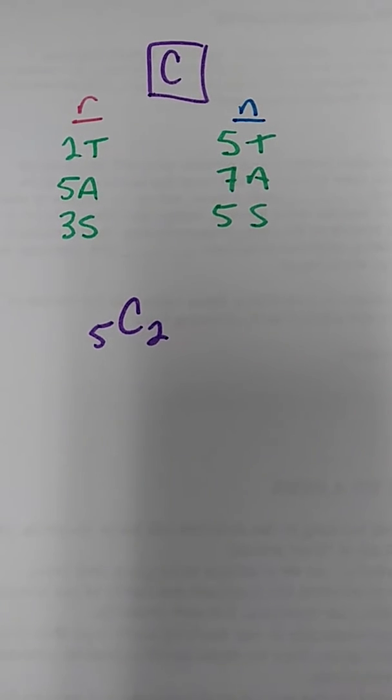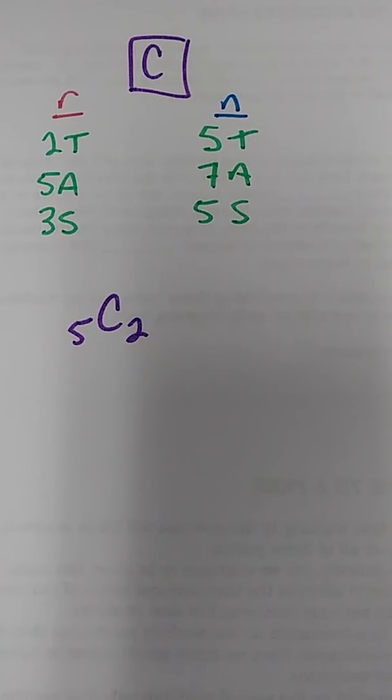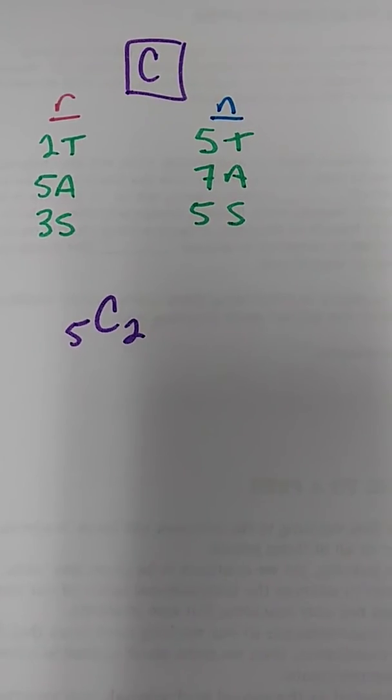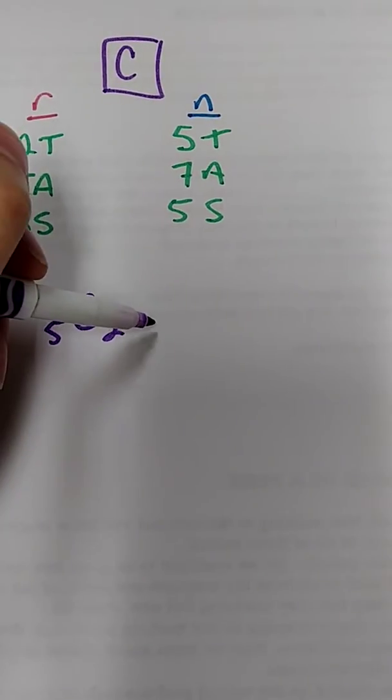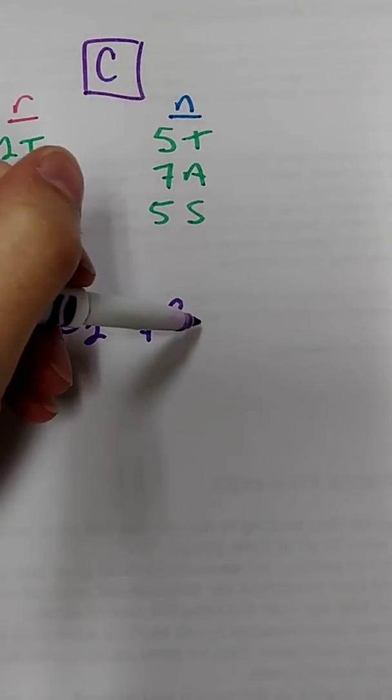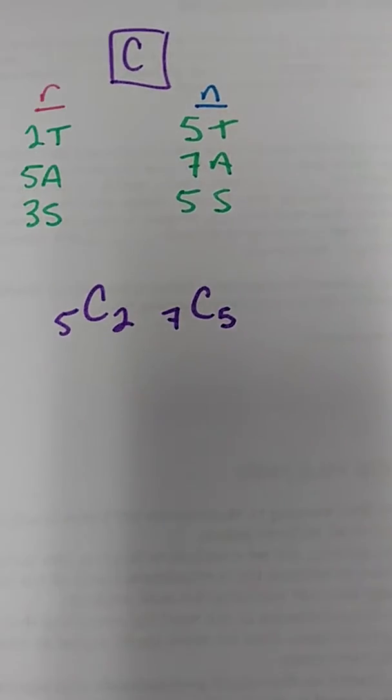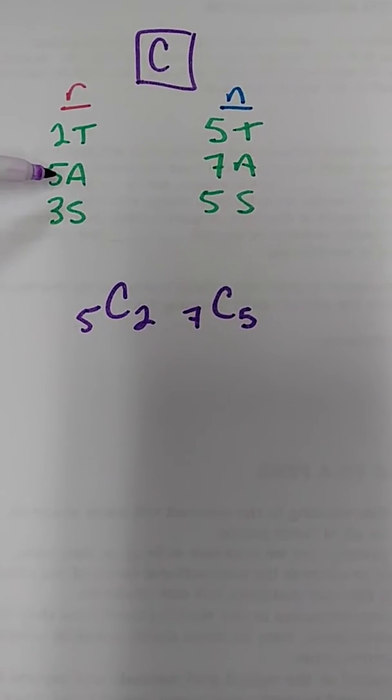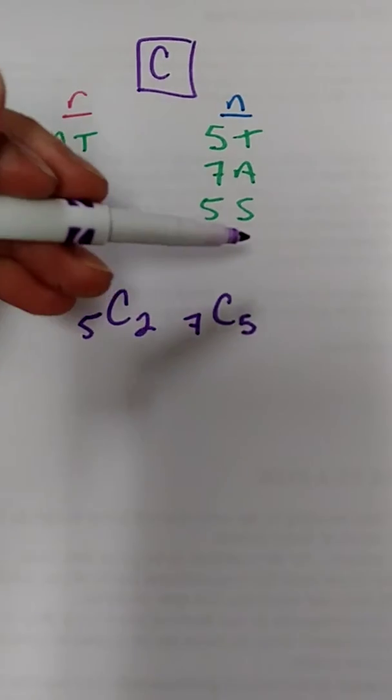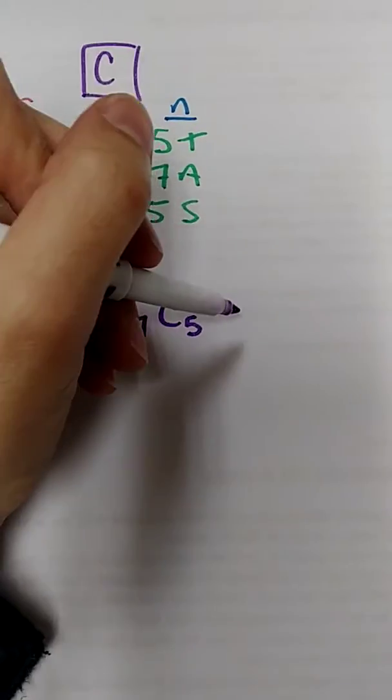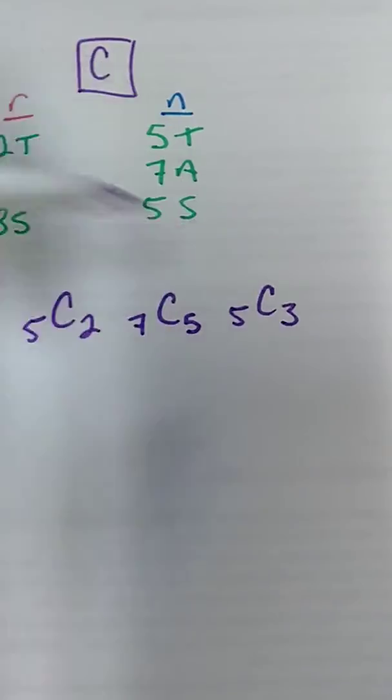So what we're going to have to figure out is how many ways we can choose a tenor. So we have five to choose from, and we only want to pick two. So we're going to do 5C2 for our first part of our decision. Now we're also going to have to choose altos. And we're going to have to do seven choose five because we have seven to choose from, but we only want to pick five of them. And lastly, we're going to have to take sopranos. We have five of them to pick from, we only want three. So five choose three.